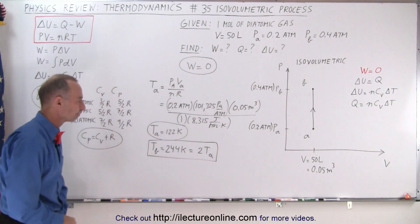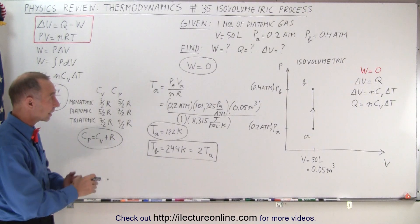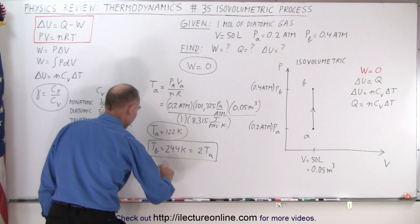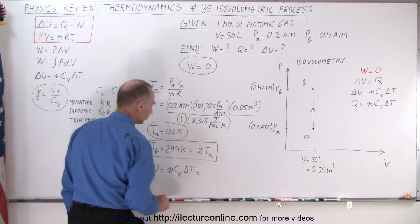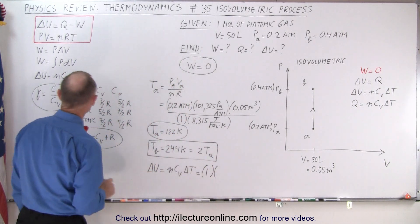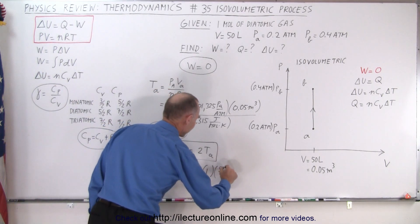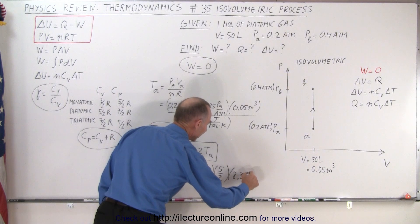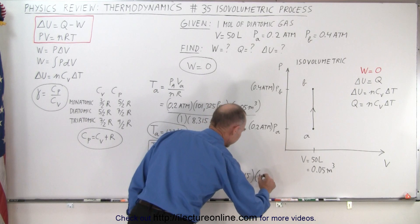Now that we have the temperature at A and at B we can then calculate the change in temperature. So therefore ΔU which is equal to N·Cv·ΔT which is equal to the number of moles times Cv. We're given that it's a diatomic gas. Diatomic gas Cv is 5 over 2 R, so 5 over 2 times the gas constant 8.315. And the change in the temperature is the difference between the two which is 122.